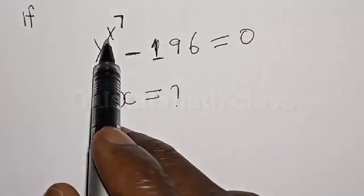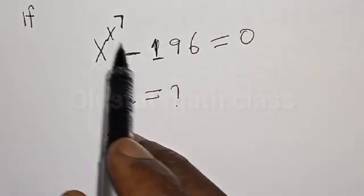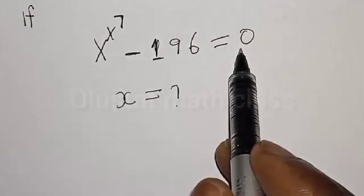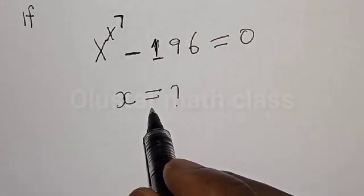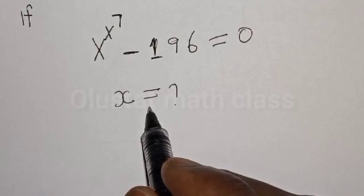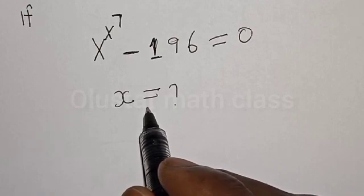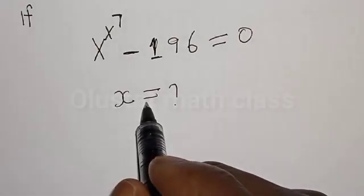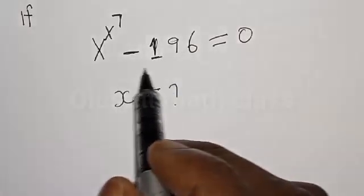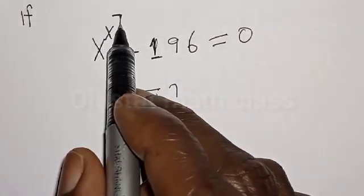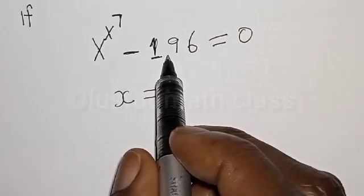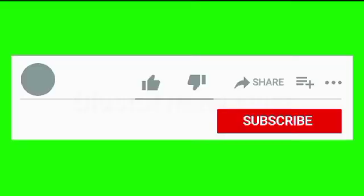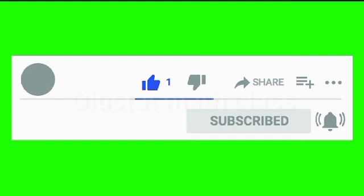If s raised to power s raised to power 7 minus 196 is equal to 0, what is the value of s? Hi everyone, welcome to this class — the Holista class. In today's class we want to find the value of s from this given exponential equation: s raised to power s raised to power 7 minus 196 is equal to 0. But before we proceed, please don't forget to like, share, comment and subscribe.